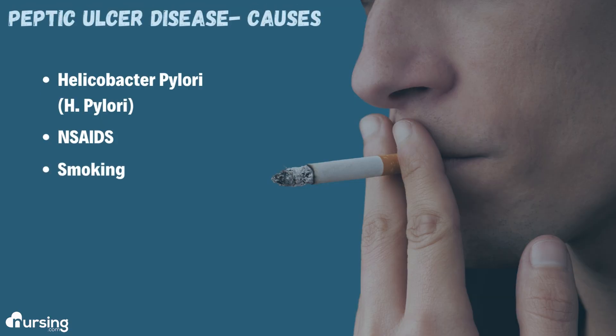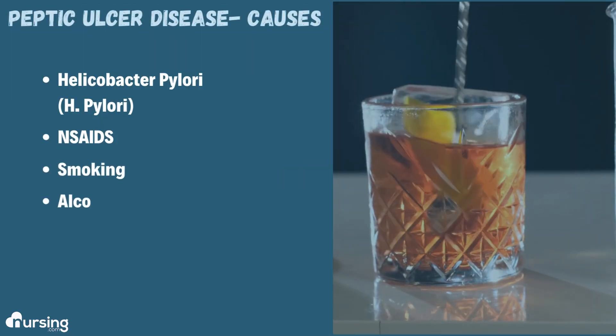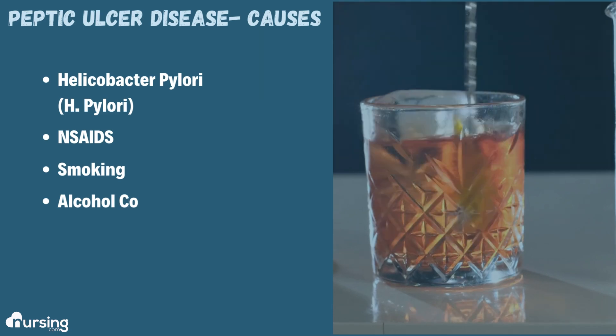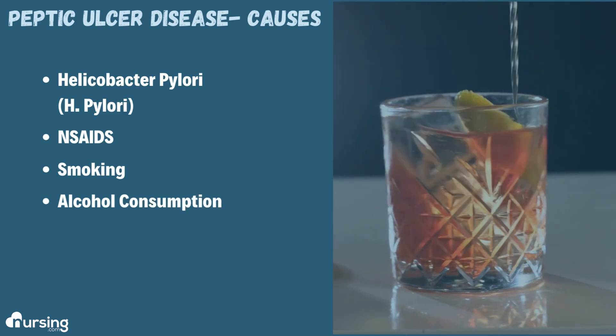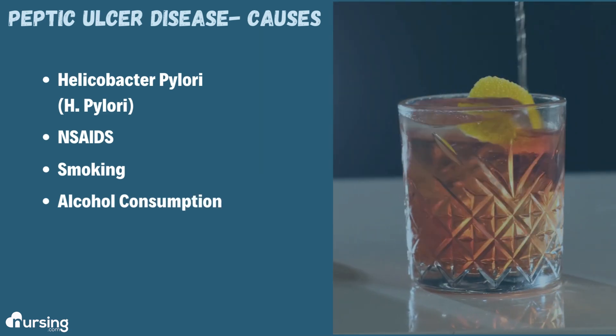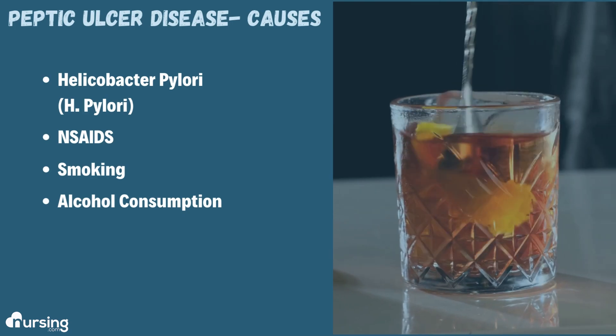Smoking as well as alcohol consumption can also directly lead to the development of peptic ulcer disease. But it's important to know that the leading culprits are H. pylori as well as NSAIDs.